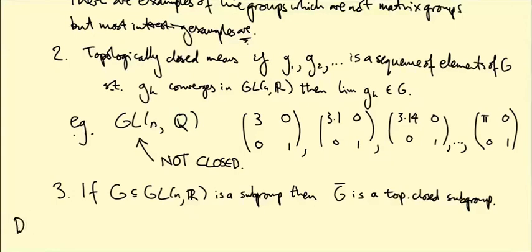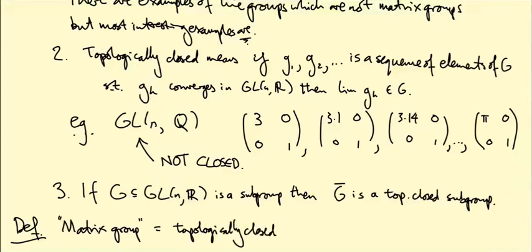So in what follows, I will use the word matrix group, or maybe sometimes matrix Lie group, to mean topologically closed subgroup, just because it's quicker to say. Topologically closed subgroup of GL(n). As I say, the reason for focusing on matrix groups in this course is because it will allow us to quickly get on to studying things like the representation theory of the groups we really care about, rather than spending ages faffing around introducing manifolds.